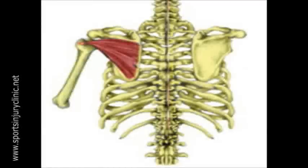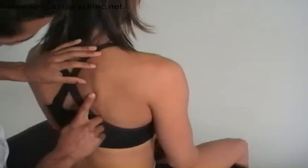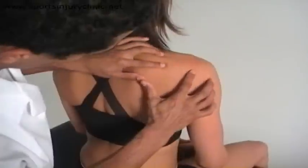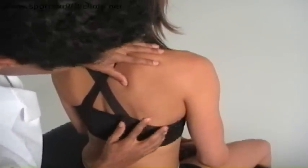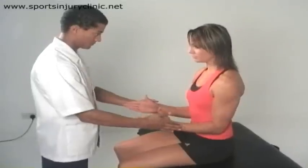When assessing a suspected rotator cuff injury, the therapist may ask questions about the current injury, previous injuries, and the patient's medical history. They will then observe the shoulder joint as well as the posture of the whole upper body. Following this, they will often look at the range of motion of the shoulder, asking the patient to move the shoulder themselves and then to relax as the therapist moves the shoulder.